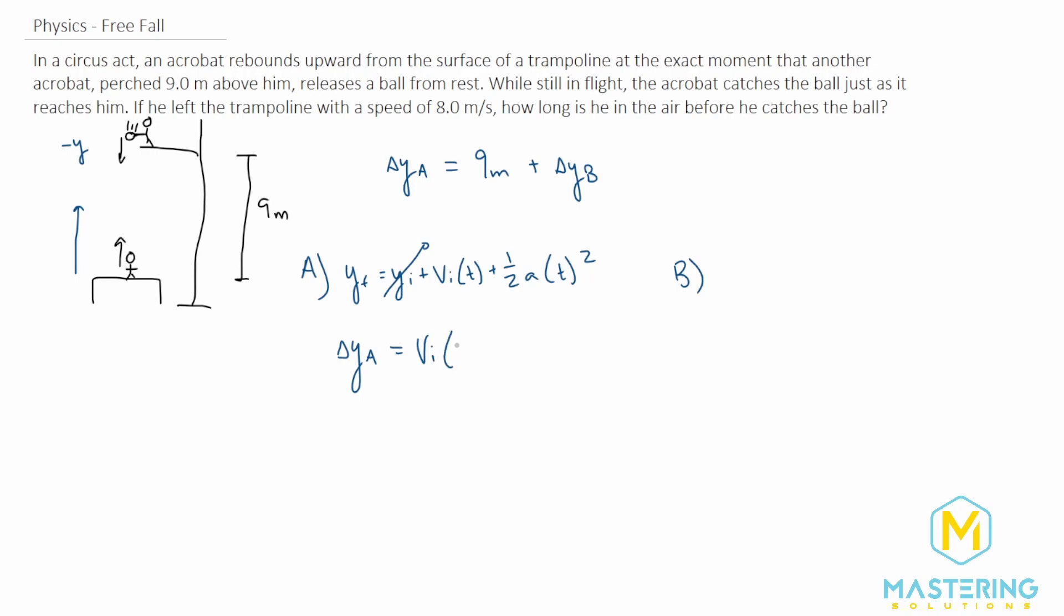So we can change that just to fit our equation above as Δy_a equals v_i times t plus one half acceleration, and let's change that to gravity, so we can plug it straight in, and that will be a negative g times t squared.